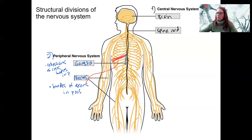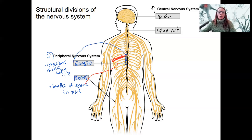This is important: people get nerves and neurons mixed up quite a bit. One more thing about the peripheral nervous system — these peripheral nerves come in two types.